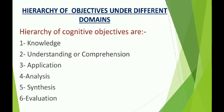Bloom classified the cognitive domain into the following six categories: knowledge, understanding or comprehension, application, analysis, synthesis and evaluation. Knowledge is the first and lowest level of the cognitive domain and it includes the recall of information and facts. Comprehension is the second category which includes translation, interpretation and extrapolation of ideas.